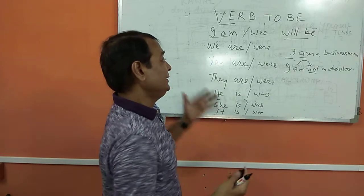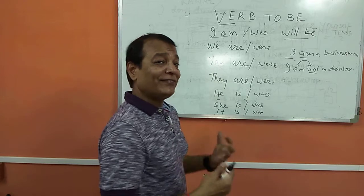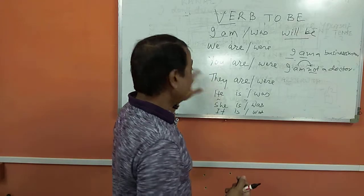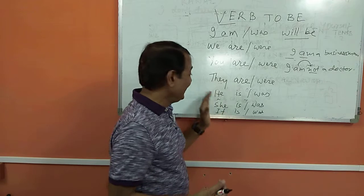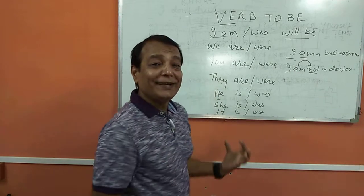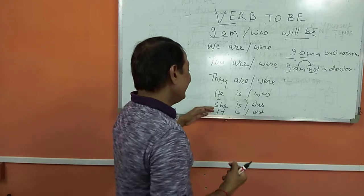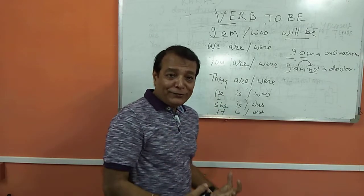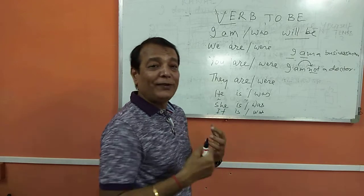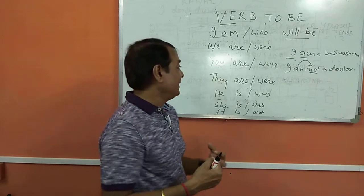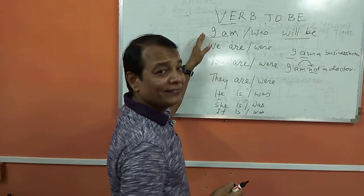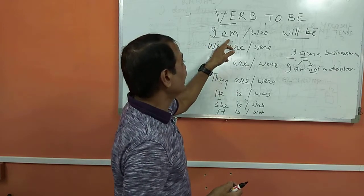You are a fighter. You are a singer. You are a dancer. They are my friends. He is my neighbor. She is my friend. She is my cousin. It is Friday today. So when you are speaking this language, you have to keep in mind that whenever the subject is here, agreement is very much necessary.